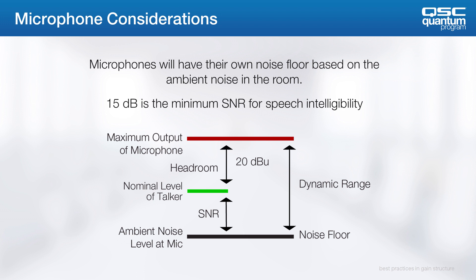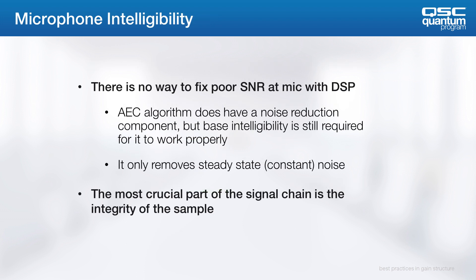Unfortunately, you can find yourself in that situation all too often, particularly when using common ceiling microphones next to air handlers. Unfortunately, no matter how great your DSP might be, there's no way to fix the signal-to-noise ratio of a given input. AEC algorithms do provide some steady-state noise reduction, but when you have poor signal-to-noise ratio, it's not going to be able to distinguish between signal and noise.